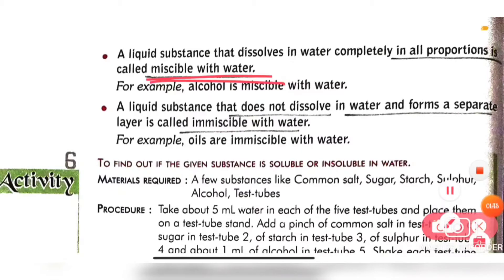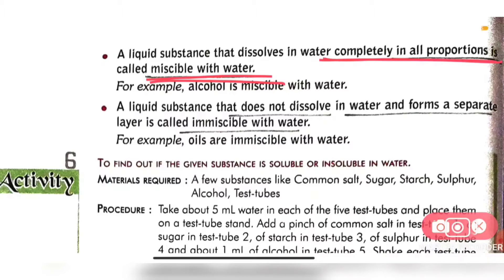A liquid substance that dissolves in water completely in all proportions is called miscible in water. Not only solids but also liquids can dissolve in water. Several liquids can dissolve in water, and the liquid which dissolves in water completely in all proportions is called miscible.